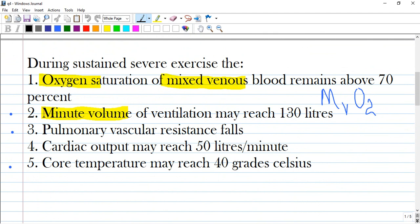During sustained severe exercise the following: oxygen saturation of mixed venous blood remains above 70%, minute volume of ventilation may reach 130 liters, pulmonary vascular resistance falls, cardiac output may reach 50 liters per minute, and core temperature may reach 40 degrees Celsius.